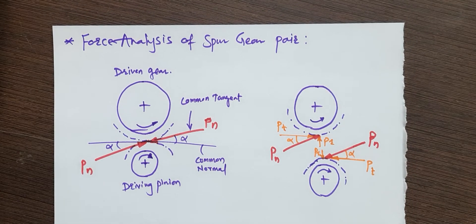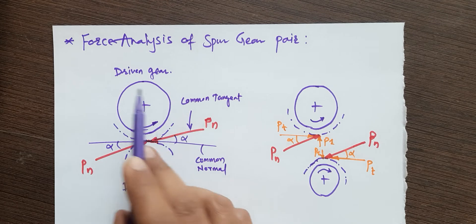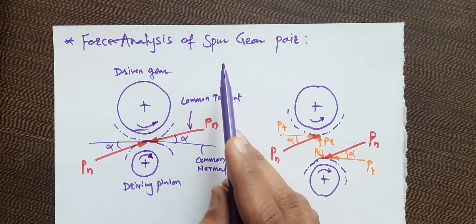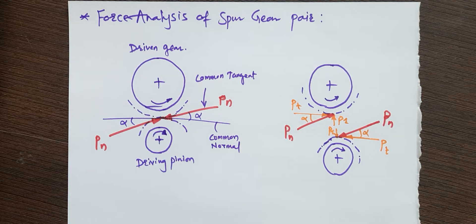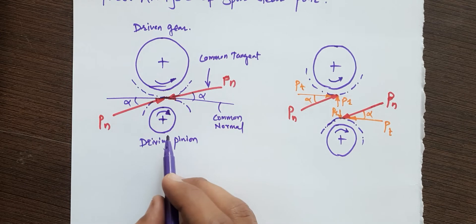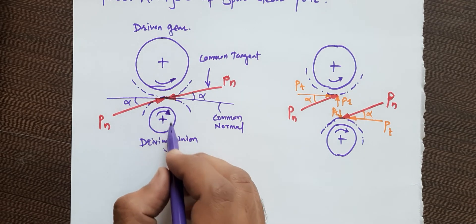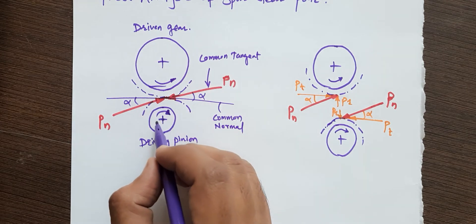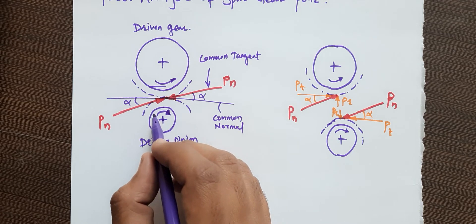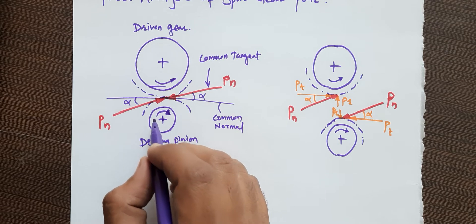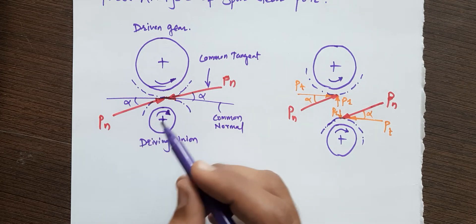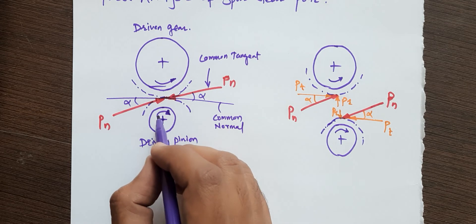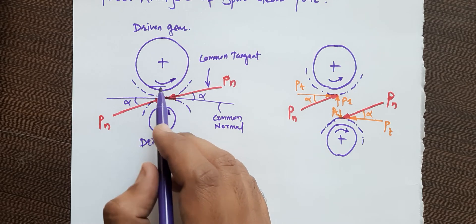In this session we will see force analysis of forces acting on a spur gear pair. Let us assume one gear and pinion — this is your driving pinion and this is the driven gear. A driving member is connected to a prime mover such as an electric motor or IC engine, which is connected to the pinion, and this pinion transmits power to the gear.